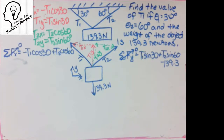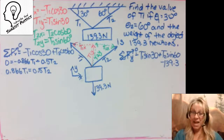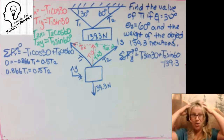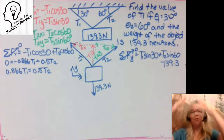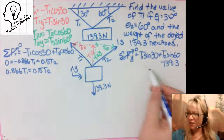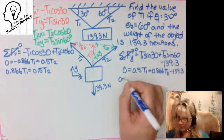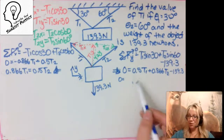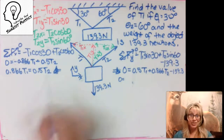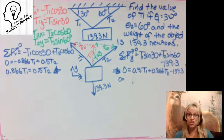Now we just do some algebra. At this point you may have a tendency to panic — oh no, I have two unknowns, I can't go any further. Don't worry about it. Move over to the other side and simplify as far as you can go. Two equations, two unknowns — don't panic. If you panic, your brain shuts down. Think back to algebra: when you have two equations and two unknowns, we're just going to solve them simultaneously.